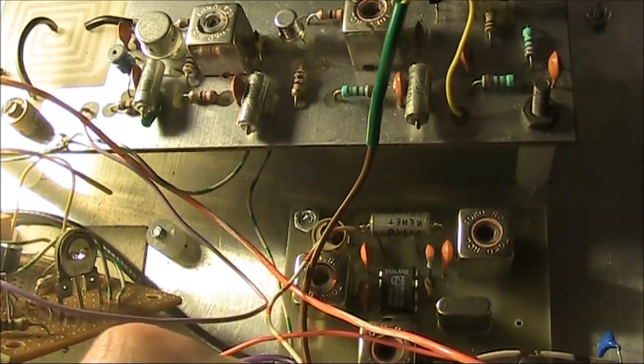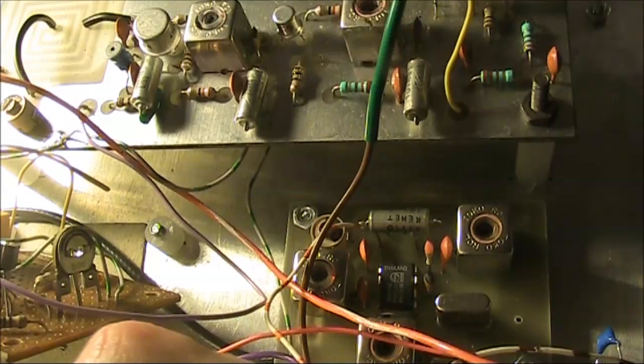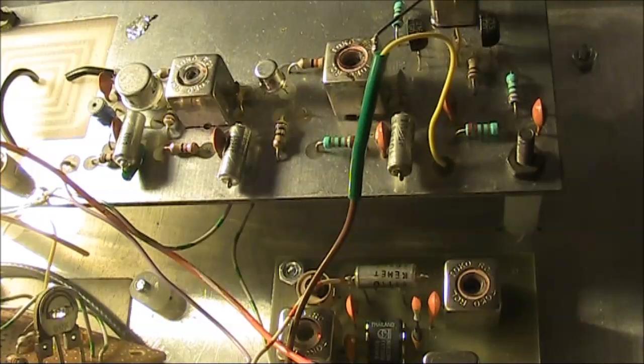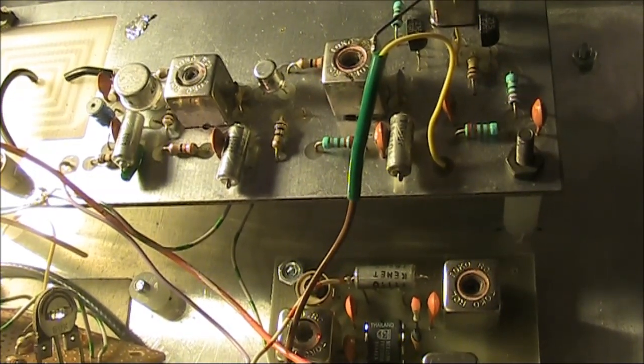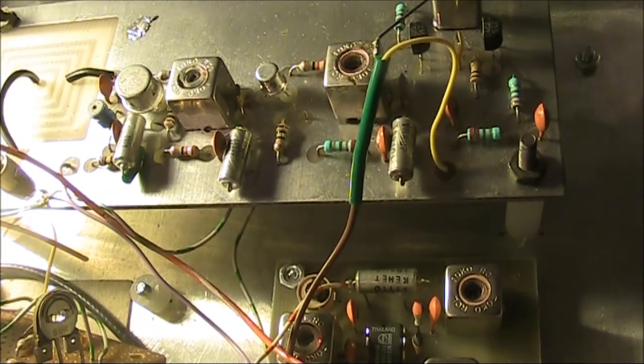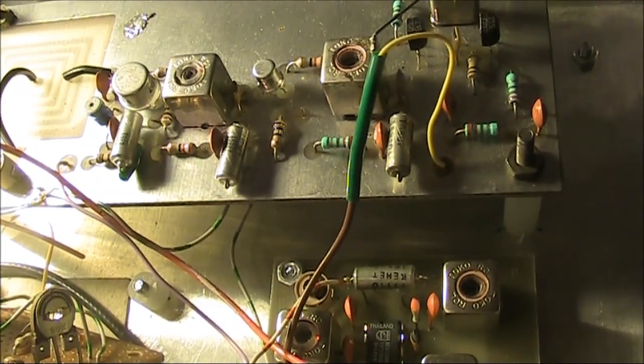A receiving converter for 50 through to 28 megahertz? That's fine. But the crystal controlled transmitter, on one frequency, is pretty much guaranteed not to get contacts.